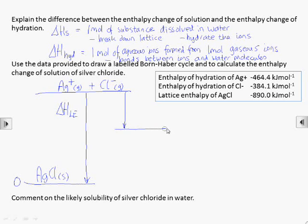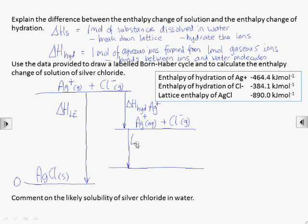Now we need to hydrate one mole of silver ions, so that's the enthalpy of hydration of Ag+. And then we need to hydrate one mole of chloride ions, so that now we have both sets of ions in the aqueous solution.